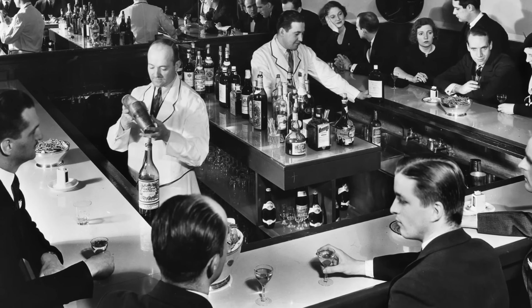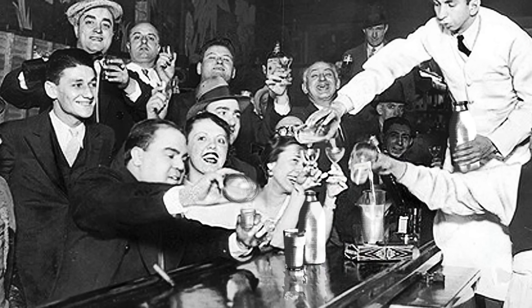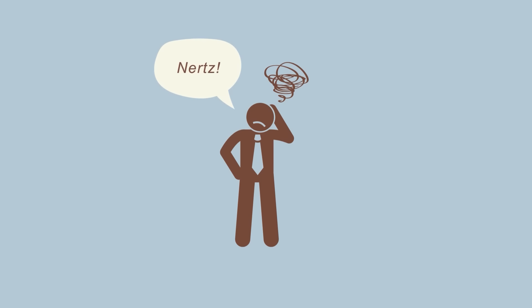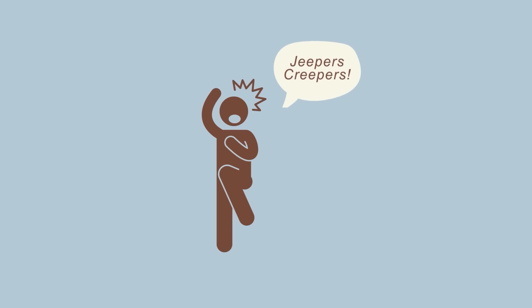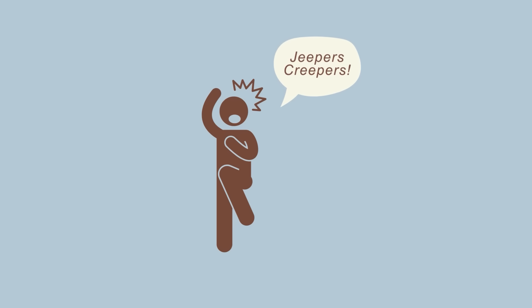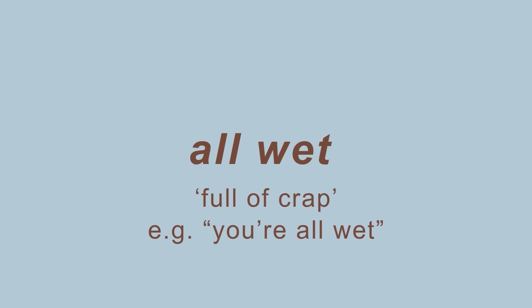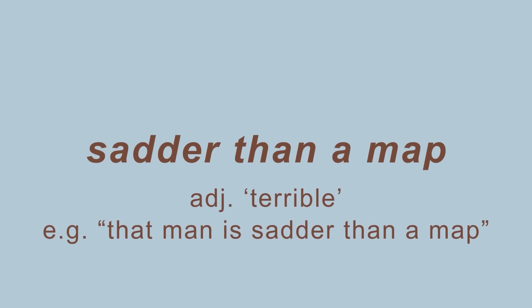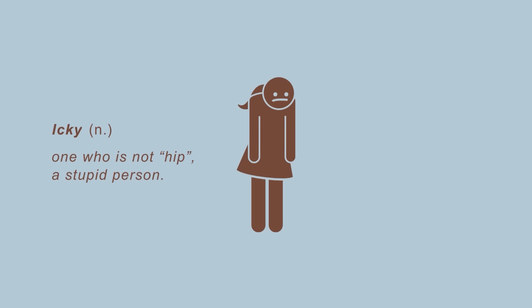In America, the prohibition of alcohol saw the rise of speakeasies — secret underground bars where people could get loose, dip the bill, and listen to the devil's music. And just as we see today, Black Americans are credited for the language of the 1920s youth, also known as jive talk. Here we get all sorts of unique swear words and slang terms. 'Nerts' was like saying 'oh crap.' 'Futs' is a euphemism for fuck. 'Jeepers creepers' was Jesus Christ. Calling somebody 'all wet' was like saying they were full of crap. 'Sadder than a map' means terrible. And 'icky' is a stupid person or one who's not hip.